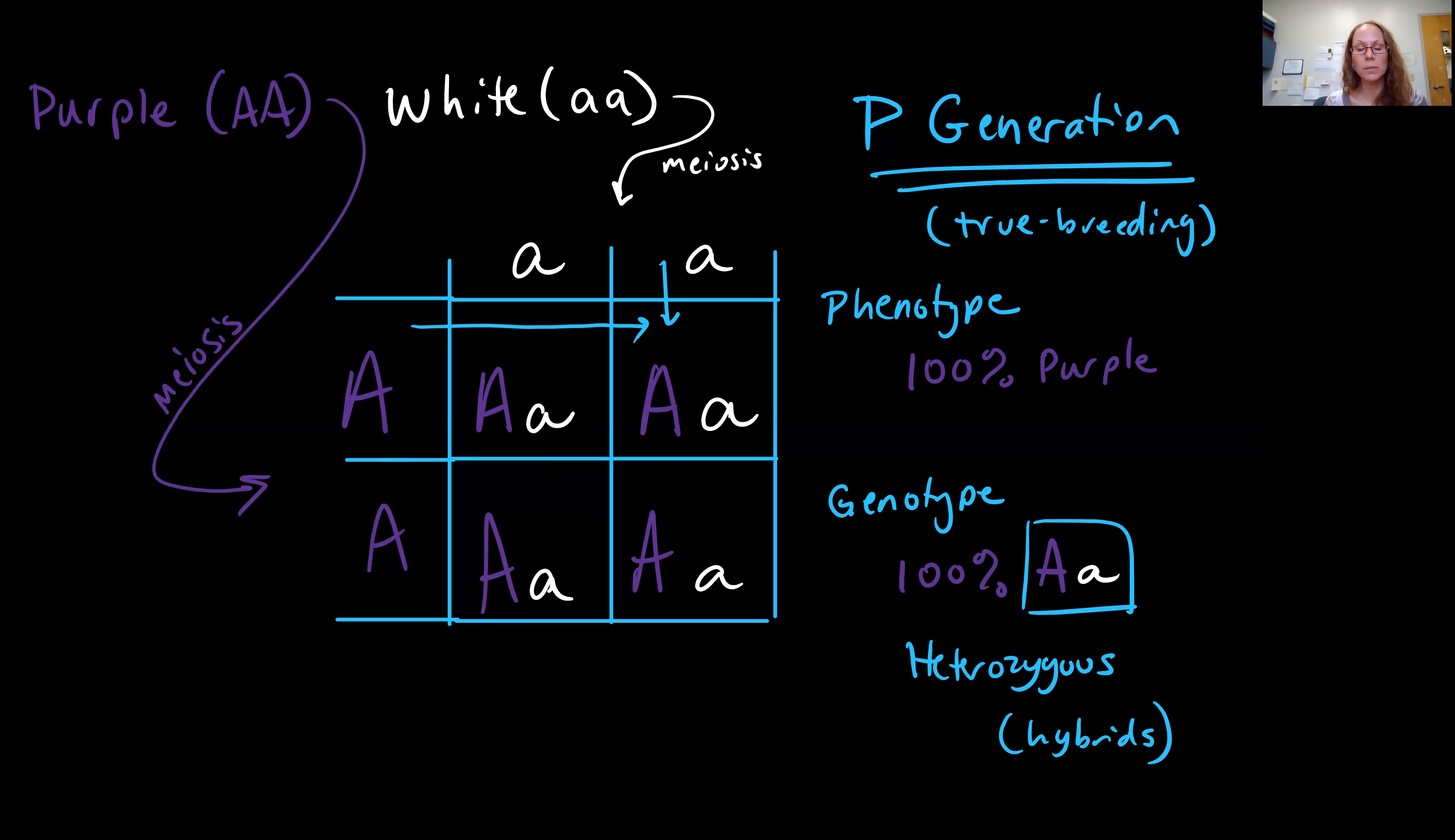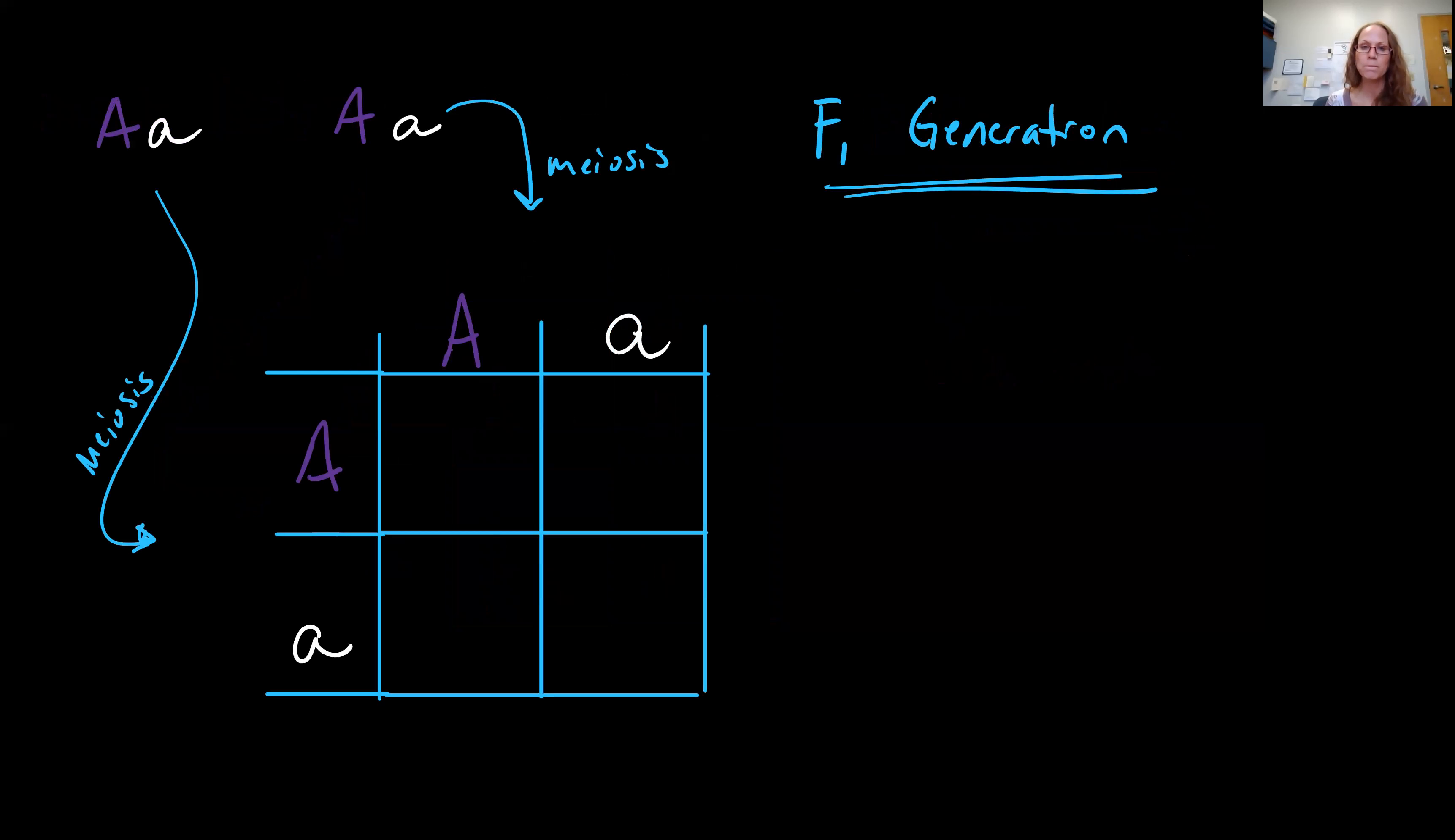Okay, so let's do another monohybrid cross. But let's, this time, let's do our F1 generation. So, we're going to cross two individuals that are heterozygous. So, again, each parent can pass on either a capital A, a dominant allele, or a recessive allele, lowercase a, in their gametes. So, we can list those top and side.